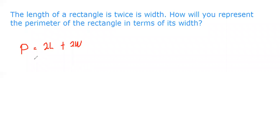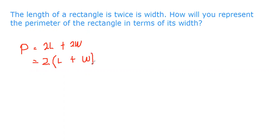We can factor this as P = 2(L + W), since both terms share a common factor of 2. This form is equivalent and easier to work with. Now, how to represent the perimeter in terms of width? We have P = 2(L + W).